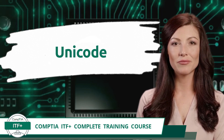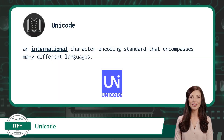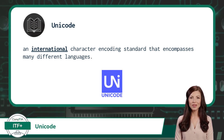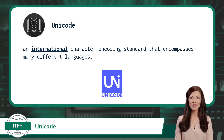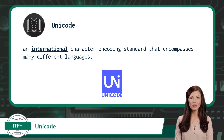Unicode is an international character encoding standard that encompasses many different languages. Character encoding is the process of assigning numerical values, also known as code points, to graphical characters, especially the written characters of human language.